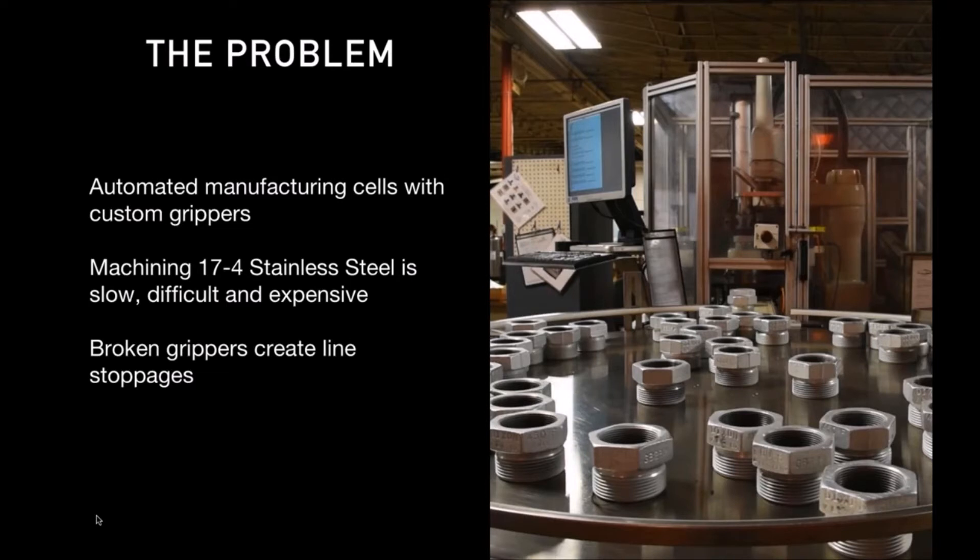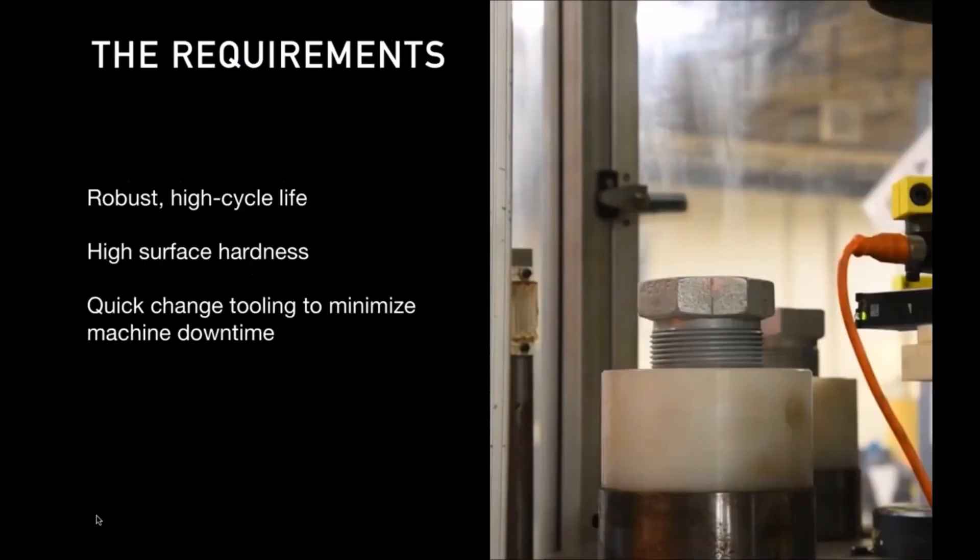That sharp thread on the inside is really abrasive to the gripper on the end of the robot arm, so they're wearing through these jaws very quickly. They need to make them out of a hard material like stainless steel. That's slow, difficult, and expensive. If these jaws wear or break, you've got line stoppages. Dixon has a lot of flexibility in the types of parts they make, so they're often changing out this tool.